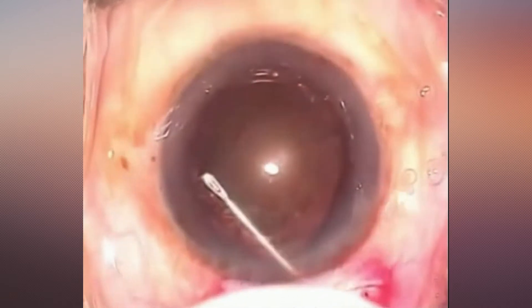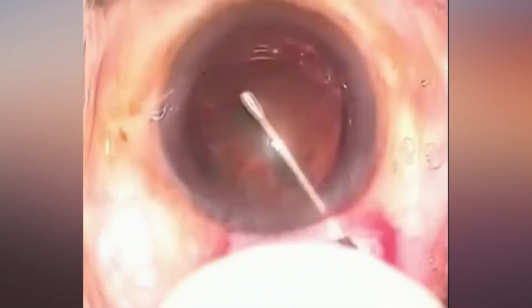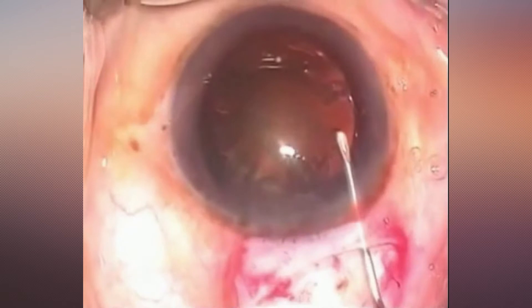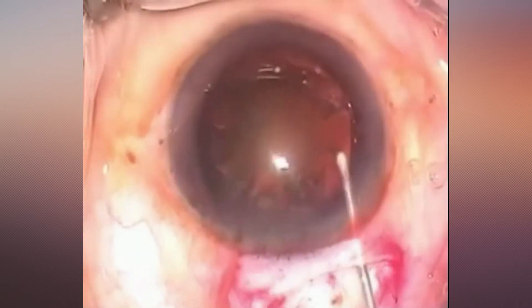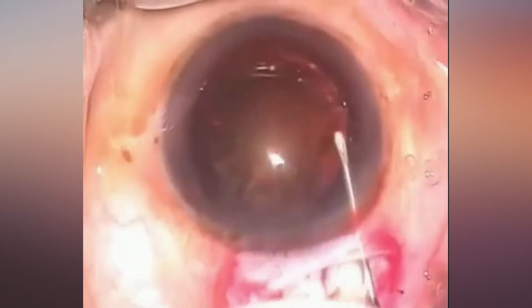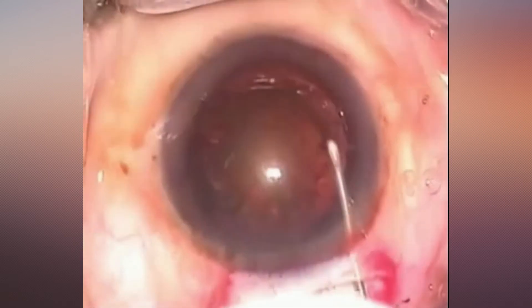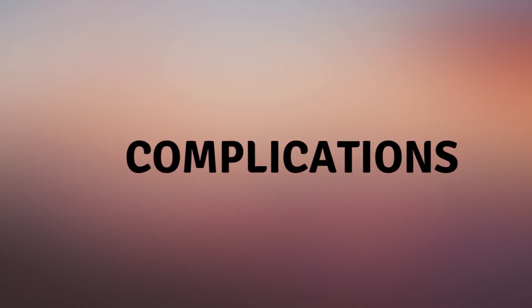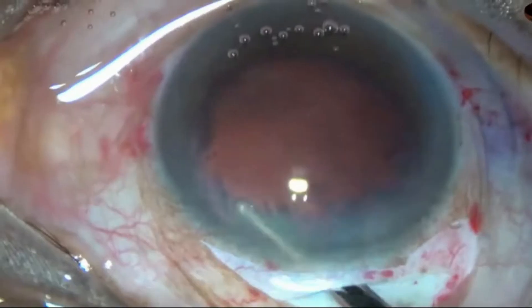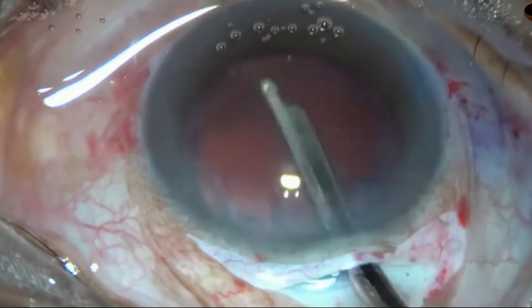The cystitome is made by either bending a 26-gauge needle or using a prefabricated commercially available cystitome. As indicated by its name, the can opener capsulotomy is a circular ragged opening with multiple irregular, freely mobile capsule tags.